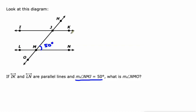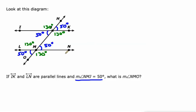As soon as we see that we have two parallel lines cut by a transversal, we know a lot of things. This angle is also 50 degrees because it's a vertical angle to NMJ. This angle is 50 degrees because it is an alternate interior angle with NMJ, and this angle is 50 degrees because it is a corresponding angle with NMJ. The other angles are 130 degrees because they will be supplementary to NMJ.